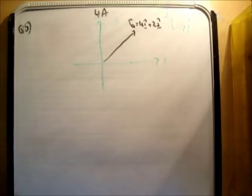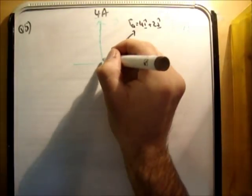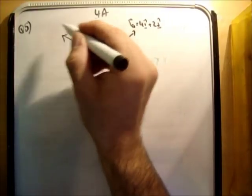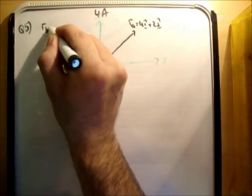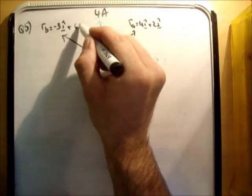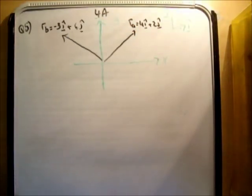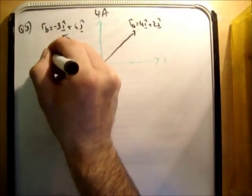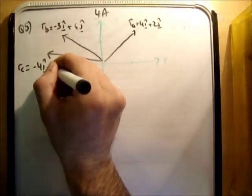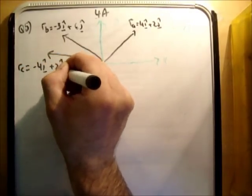Then R B is negative 3i hat plus 6j hat, so it's in this direction. Negative 3, so it's negative x positive y, plus 6j hat, and then R C is negative 4i hat plus 2j hat, so it's in the same quadrant. Like so.